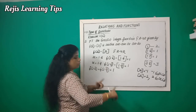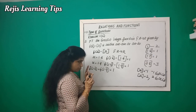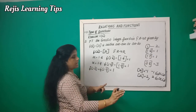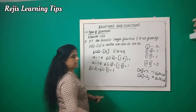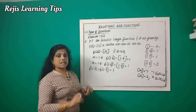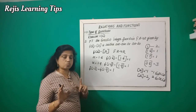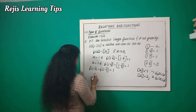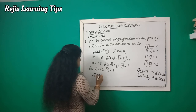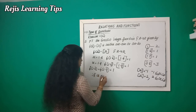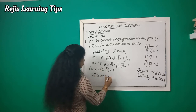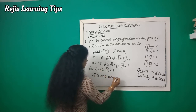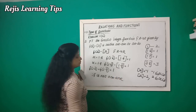Since f(1.6) = f(1.9) = 1 but 1.6 ≠ 1.9, there is no unique image in y for each element of x. Therefore, f is not one-one.